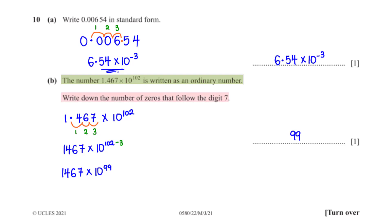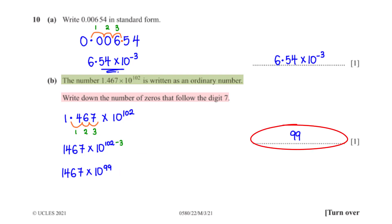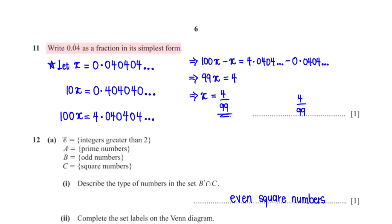The number 1.467 times 10 to the power 102 is written as an ordinary number. Write down the number of zeros that follow the digit 7. To write this as an ordinary number we move the decimal point to after 7, which takes 3 moves to the right, so the number of zeros after 7 is 102 minus 3, which is 99.